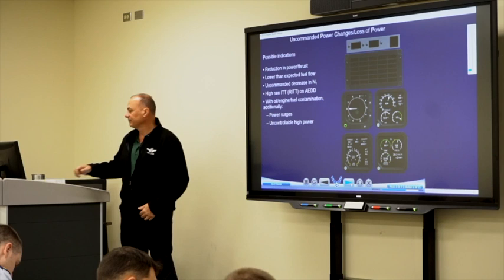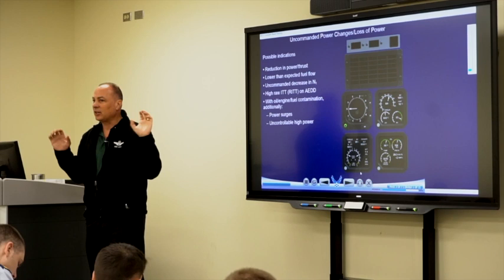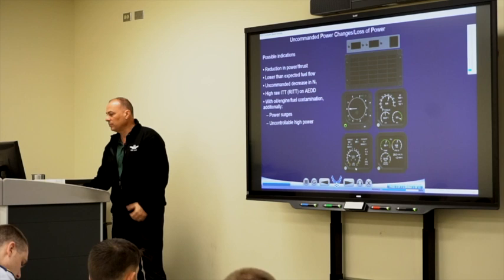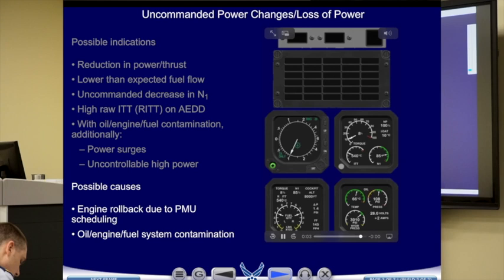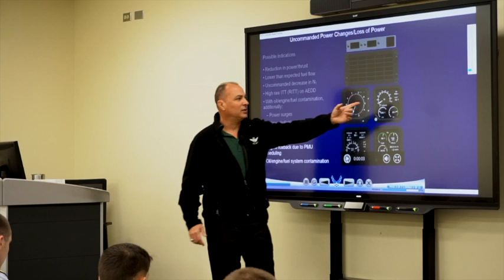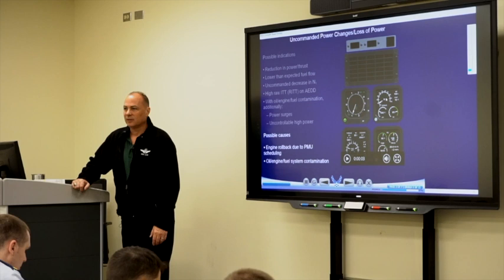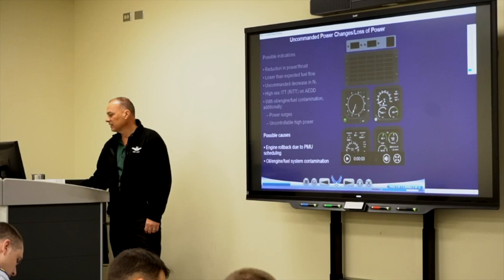Uncommanded power: the engine is either giving more torque than commanded or doing power step changes you don't want. The engine is acting in a way you're not making it act. You can see on the display it's decaying and you didn't do anything — NP is still good at 100 but all torque is lost. That situation may seem like an engine failure, but if you have no GOOF lights and NP is at 100, a thorough review of engine instruments reveals an uncommanded power change.